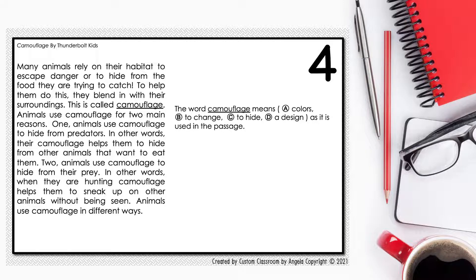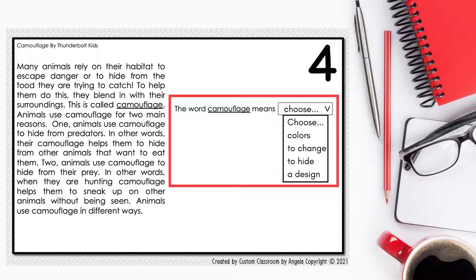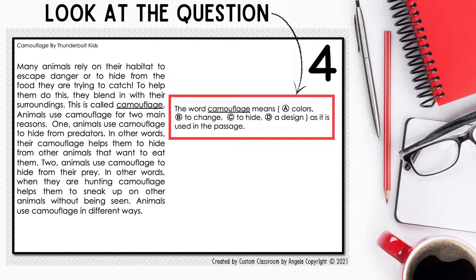First, let's look at what this type of question will look like for the online test versus if you do paper-based practice in your classroom. The online test will include a drop-down box students must click on to then see their answer choices. Students will then select their answer from the box. Now let's look at how the question would look on a paper-based test — in your classroom, it might appear like this.